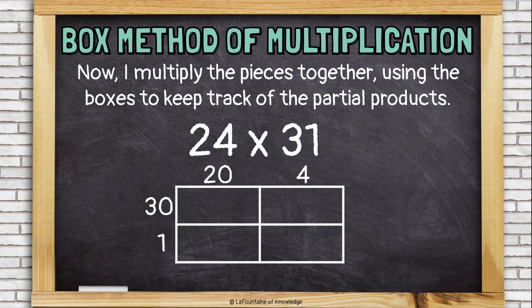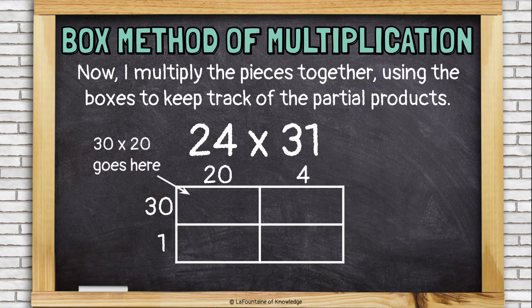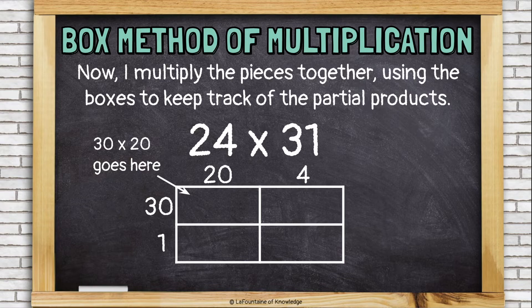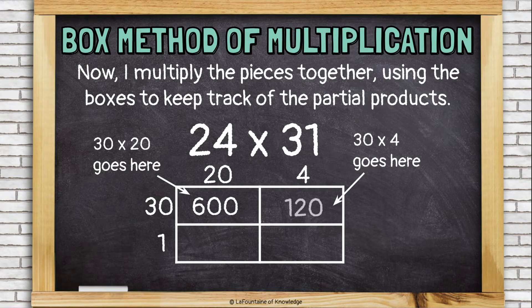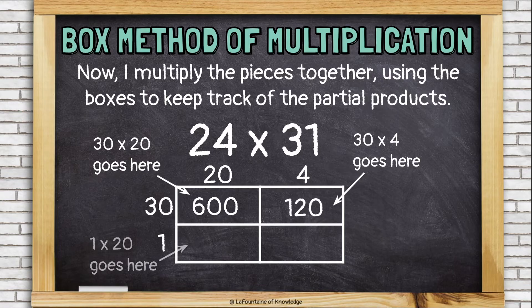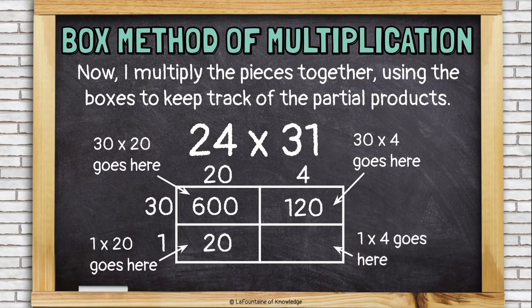Okay, now I'm ready to multiply. So, in this box, I'm going to multiply 30 times 20. If I know 2 times 3, I know 30 times 20, 600. In this box, I'm going to multiply 30 times 4, which is 120. This box is for 1 times 20, 20. And this box is for 1 times 4, which is 4.